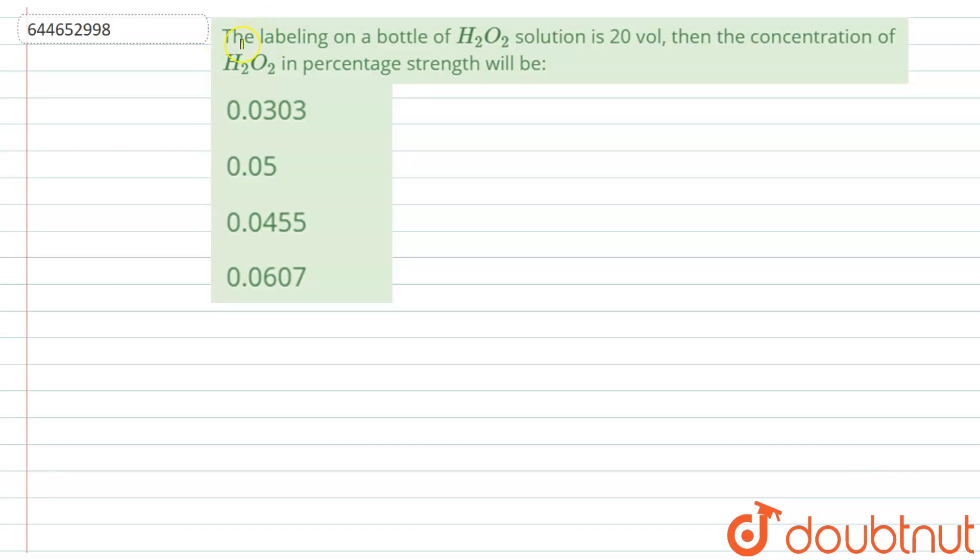The question given here is: the labeling on a bottle of H2O2 solution is 20 volume, then the concentration of H2O2 in percentage strength will be. Options are 0.0303, 0.05, 0.0455, and 0.0607.